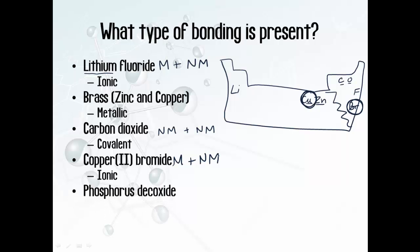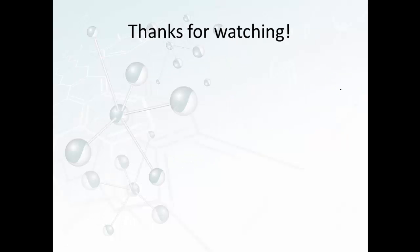One more example: phosphorus decaoxide. Phosphorus and oxygen are both non-metals, so that is covalent bonding. And that is it for our overview of the three main types of bonding: ionic, covalent, and metallic. Thank you for watching.